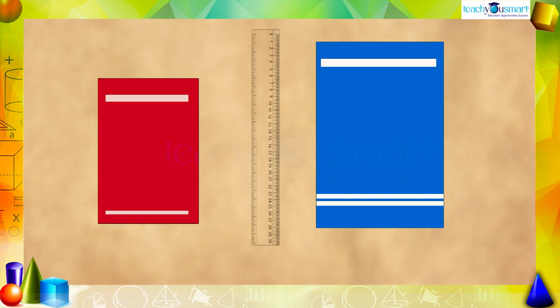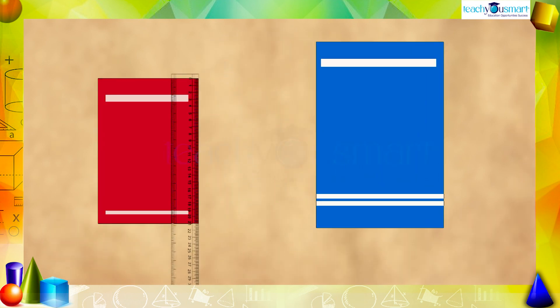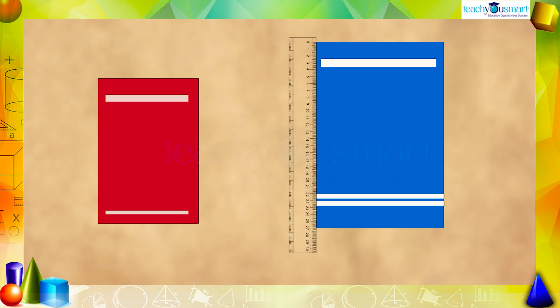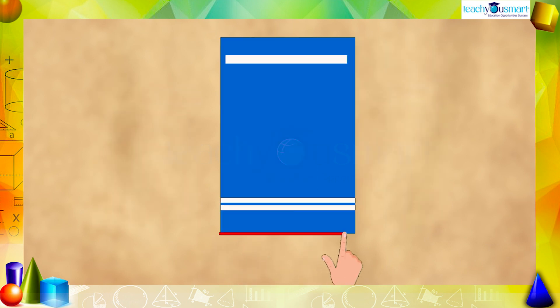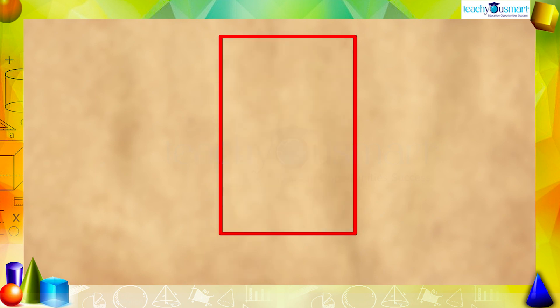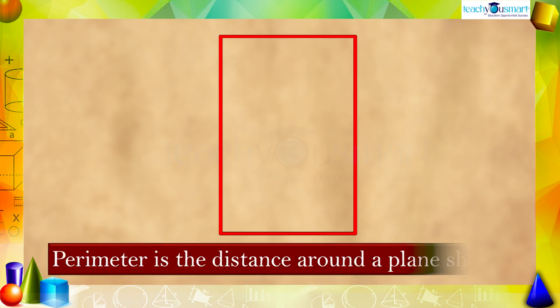Similarly, we can see the lengths of the sides are also different. The length is the measurement of something from end to end, and the total length or measure of its boundary is termed the perimeter — that is, the perimeter is the distance around a plane shape.